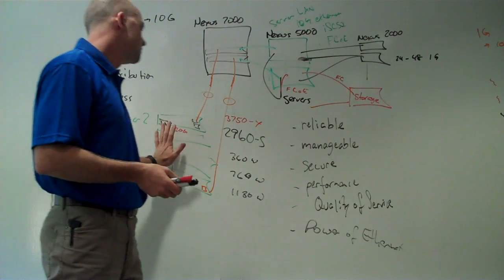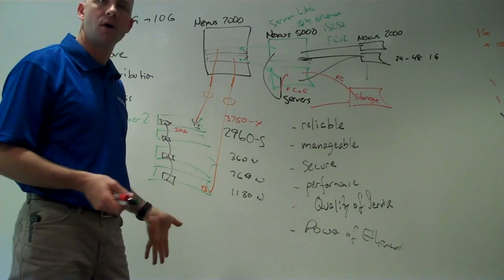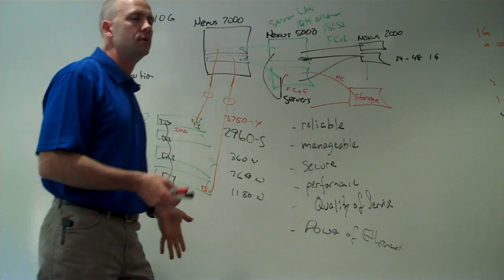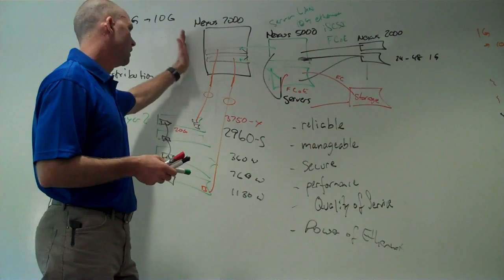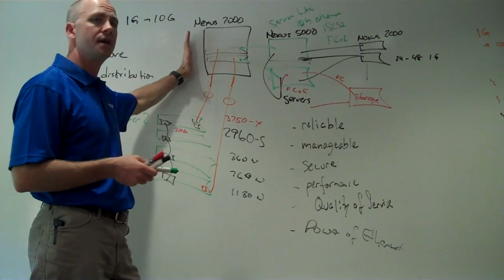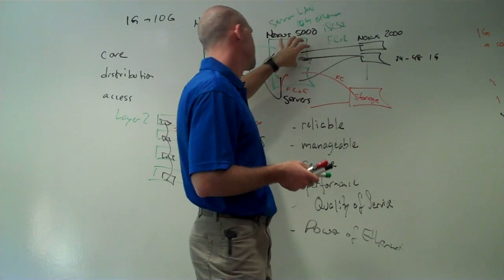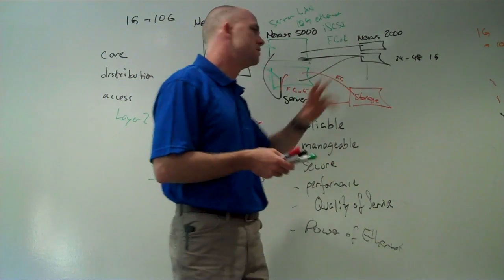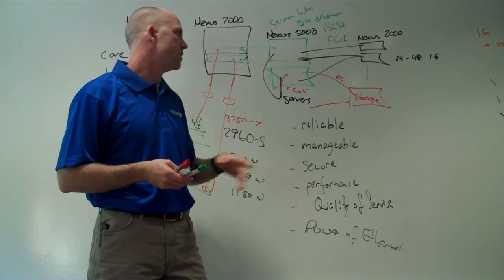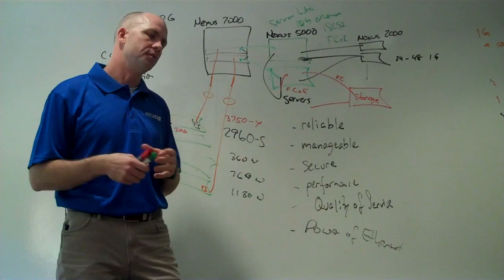So going to the access layer and doing 10 gigabit uplinks and 1 gig power over ethernet to clients, to phones, to access points. So we're going to have a Nexus 3750X or a Nexus 7000 stack at the core distribution layer. And then a separate server switch setup, which is Nexus 5000s and then Nexus 2000s. And that will address the storage, the top rack switching, and the other things.